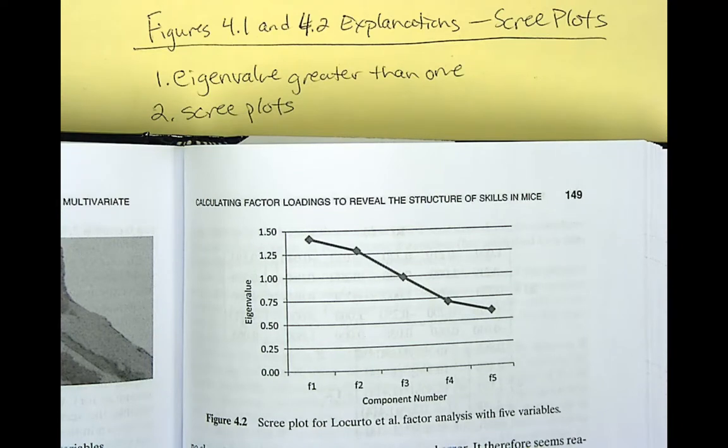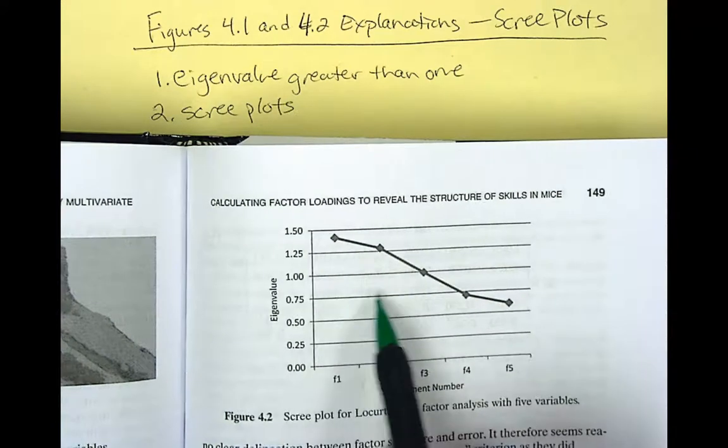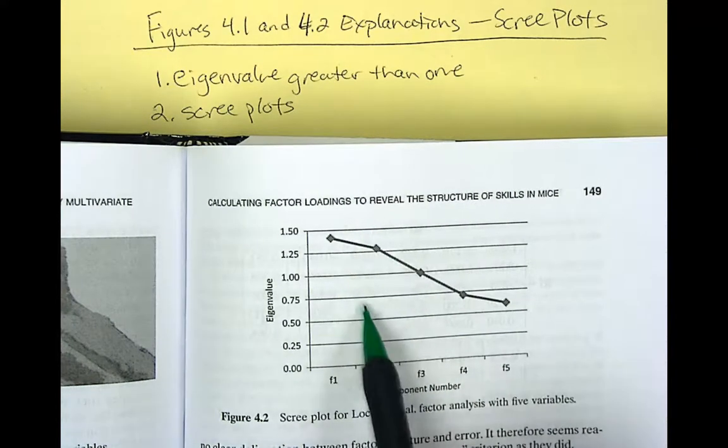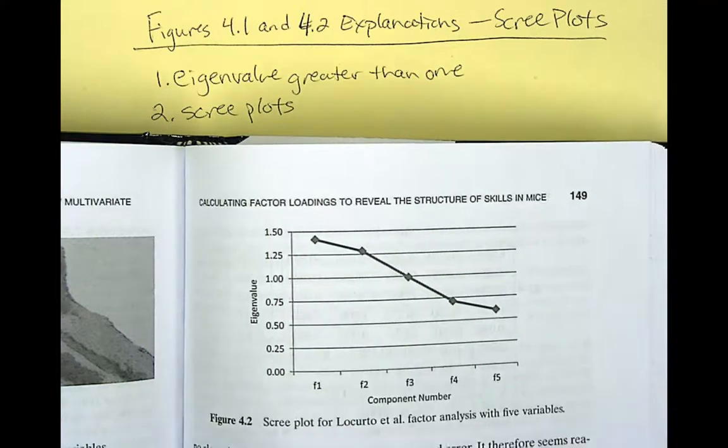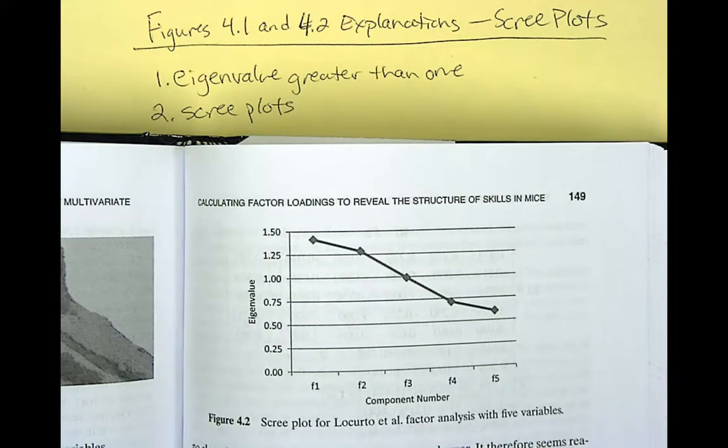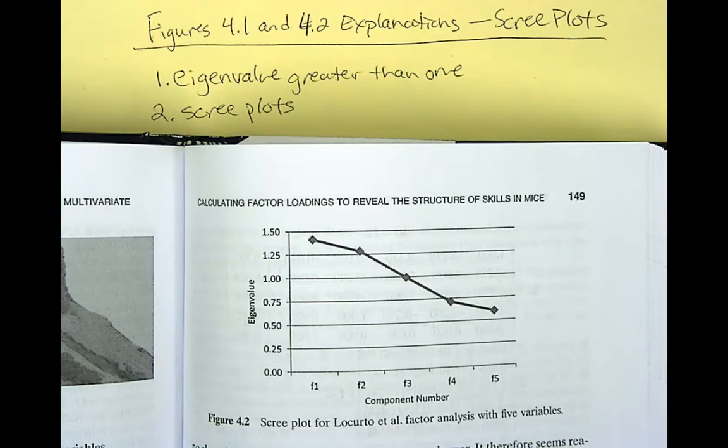So it's helpful to look at both when you're doing a factor analysis. Look at the eigenvalues, see how many are greater than one, but also use a scree plot. If there's a pronounced knee and you can really see, like we did in the last one, where there could be a clear delineation between factor structure and error, then certainly go with the scree plot criterion.